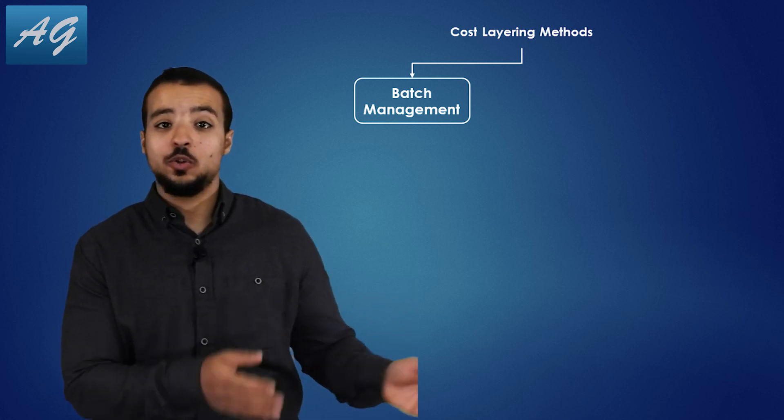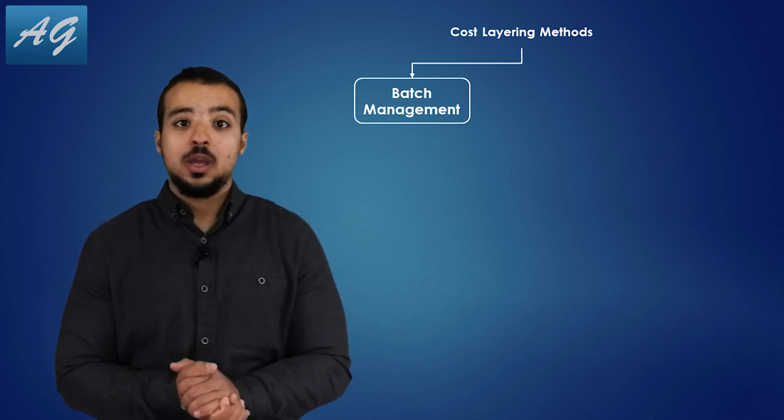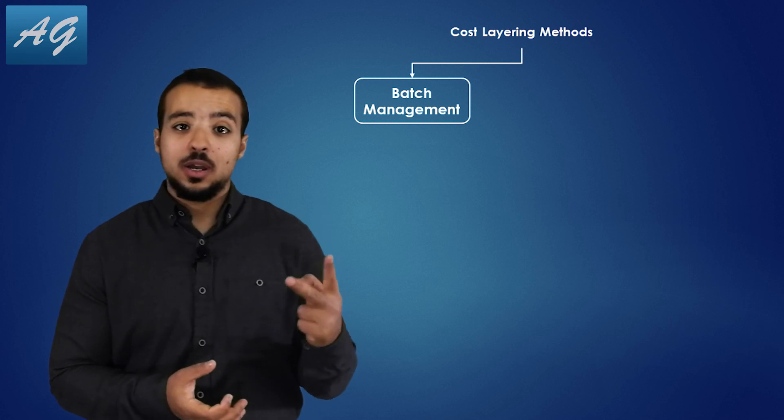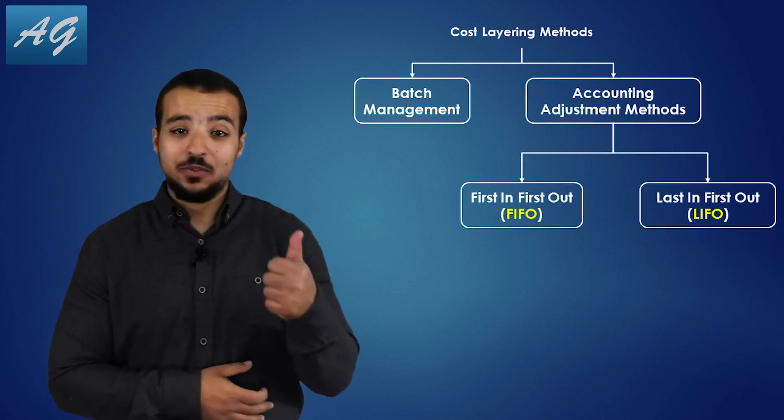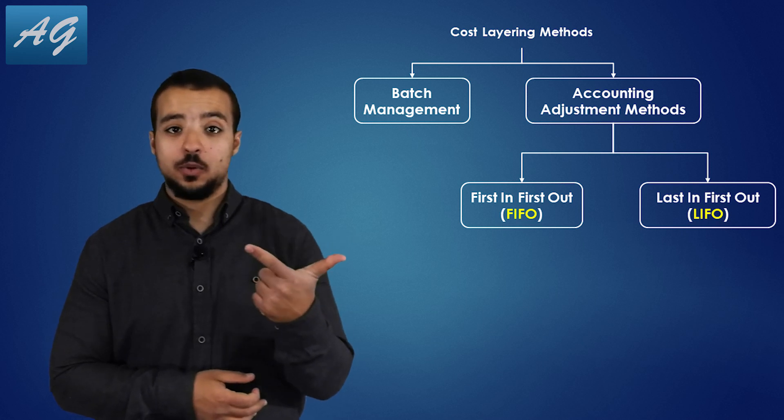Now the other two methods are accounting adjustment methods, which are first in first out and last in first out.